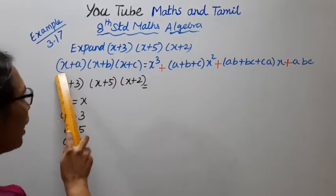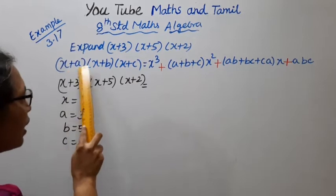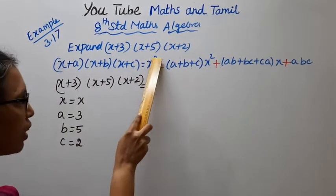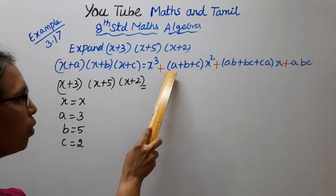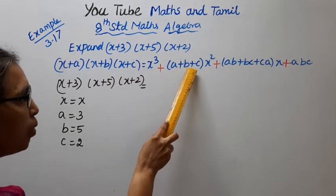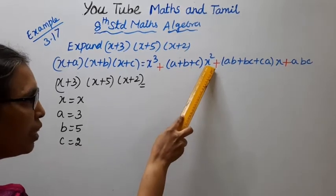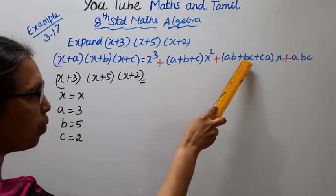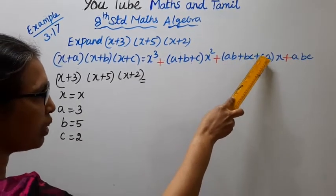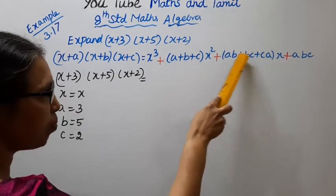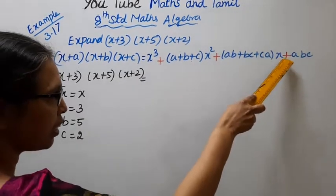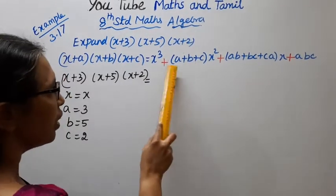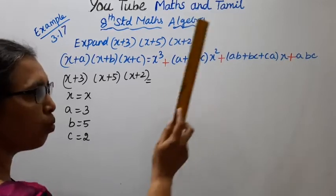Using the core identity: (x plus a)(x plus b)(x plus c) equals x-cubed plus (a plus b plus c) into x-squared plus (ab plus bc plus ca) into x plus abc. The red color shows the plus signs — this is a very important identity.